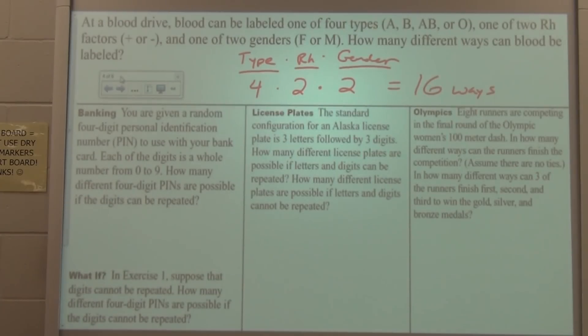Next example, right here. You're given a random four-digit personal identification number, or PIN, to use with your bank card. Each of the digits is a whole number, from zero to nine. How many different four-digit PINs are possible if the digits can be repeated?